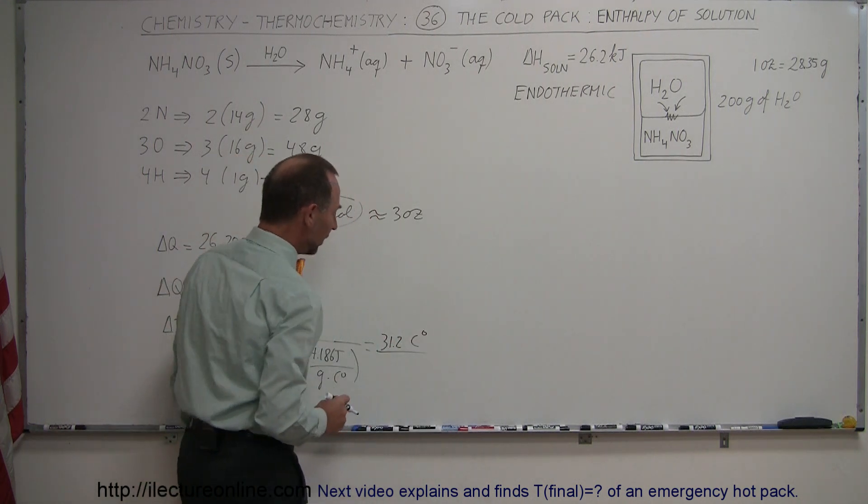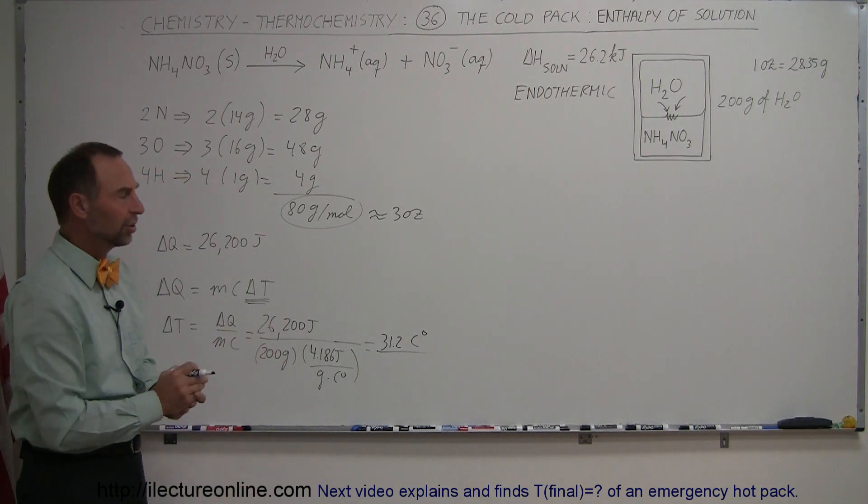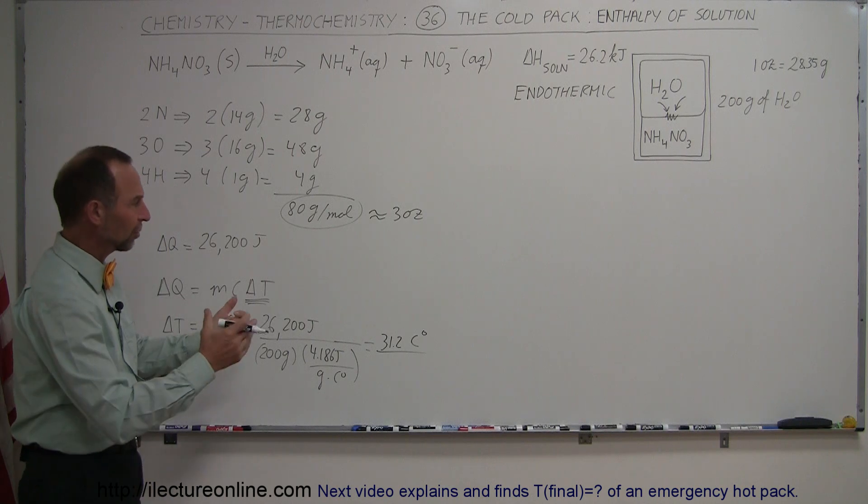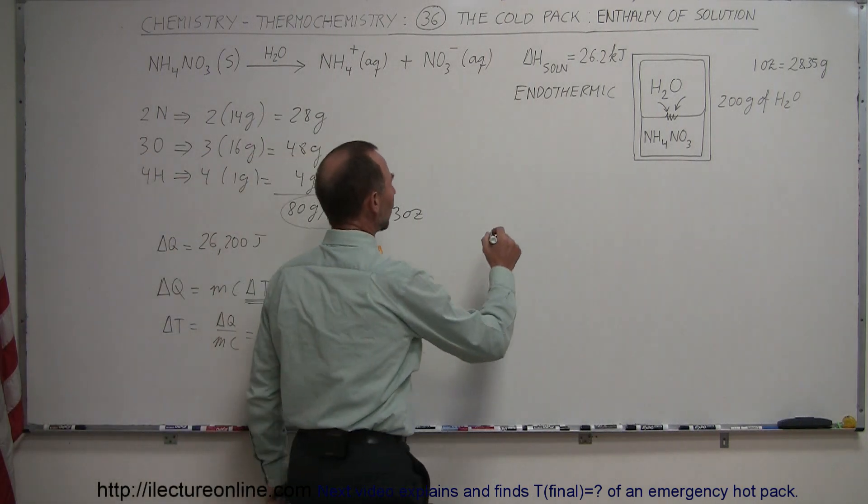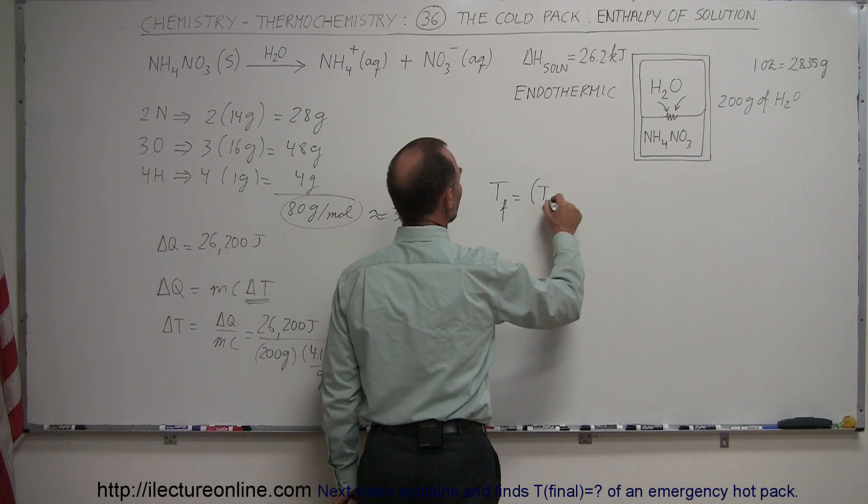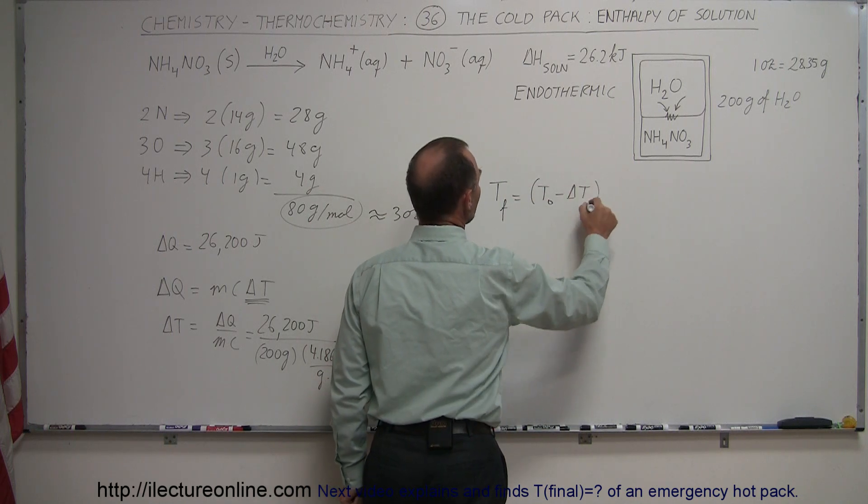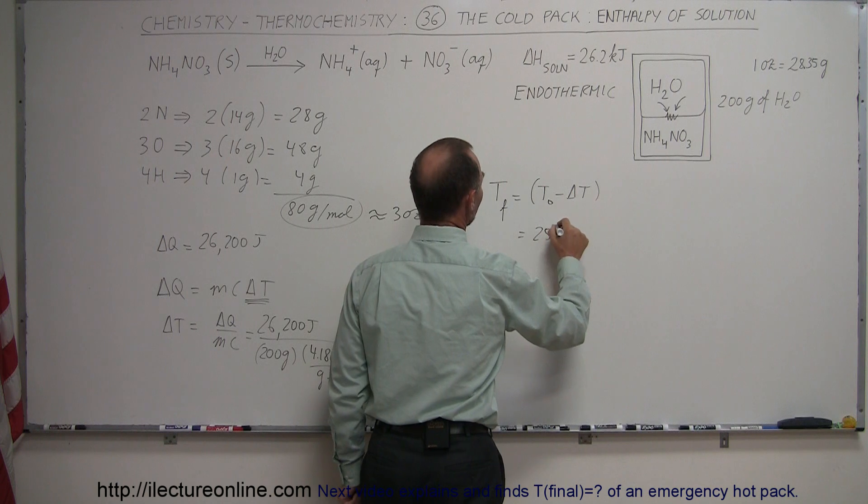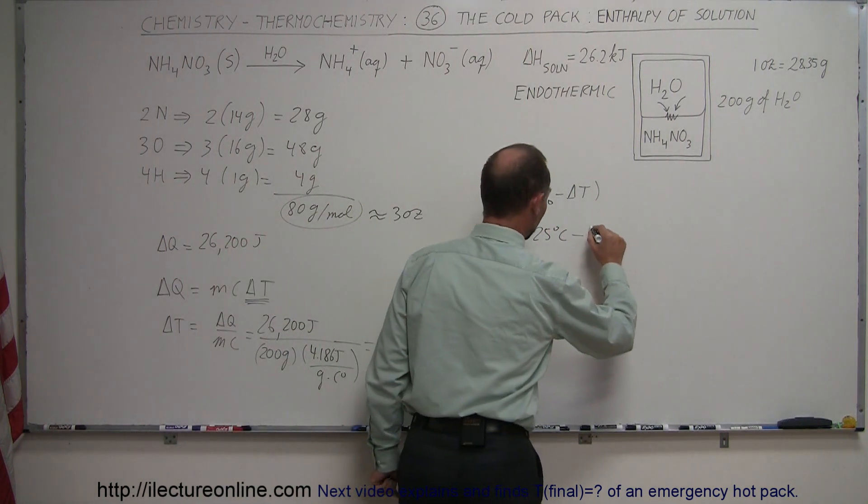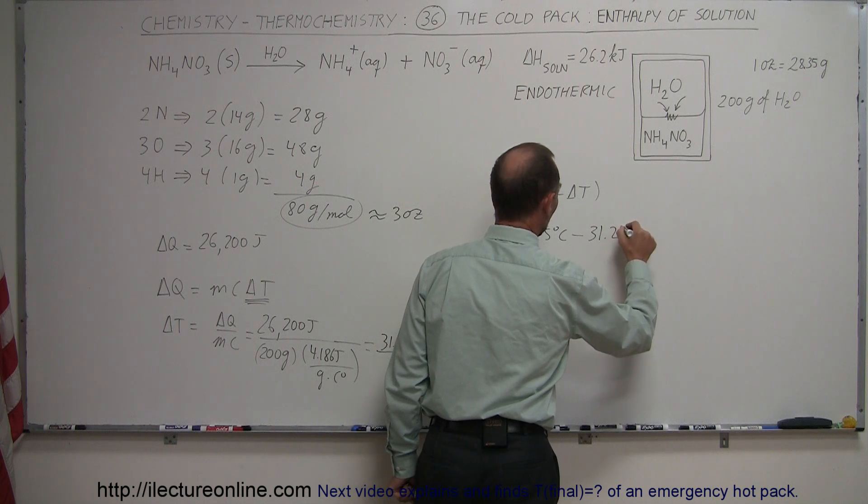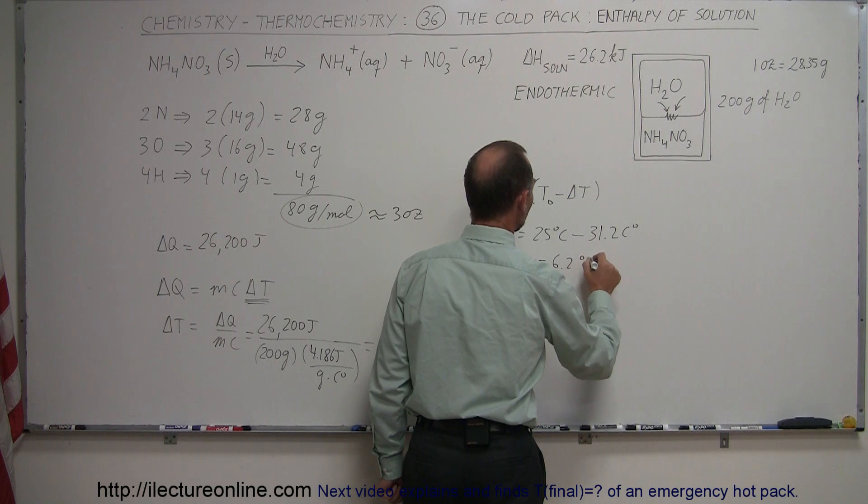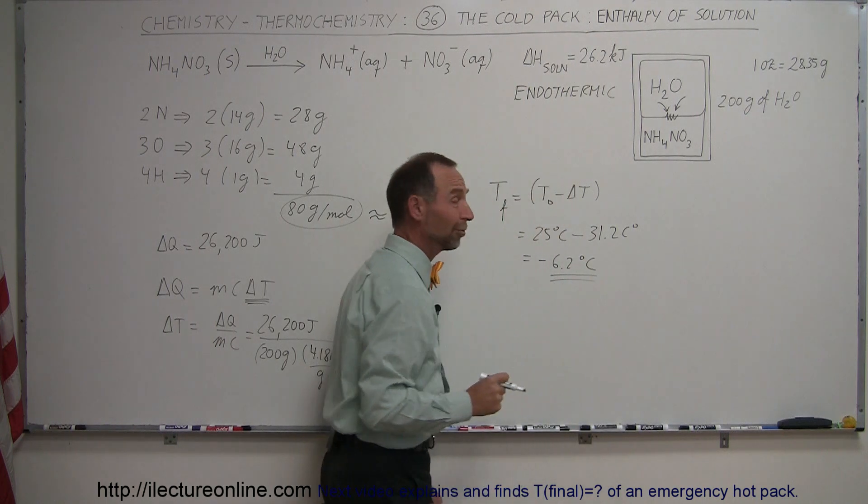So assuming that we have this cold pack sitting in someone's sports bag or someone's first aid kit at the soccer field, let's say it's about 25 degrees outside. So the temperature final is equal to temperature initial minus the delta T. And so this is equal to 25 degrees centigrade minus the decrease in the temperature from this reaction, 31.2 centigrade degrees.